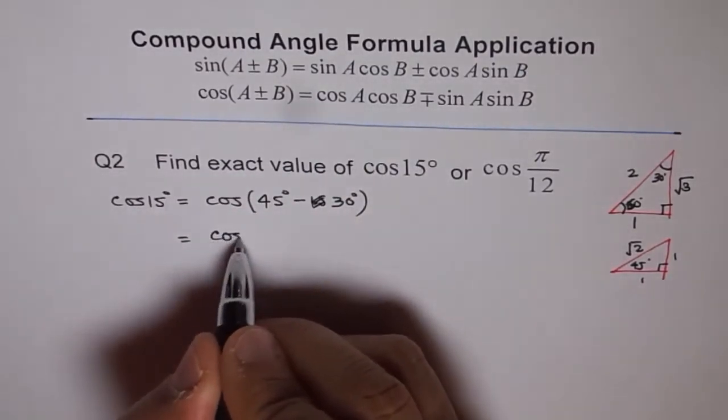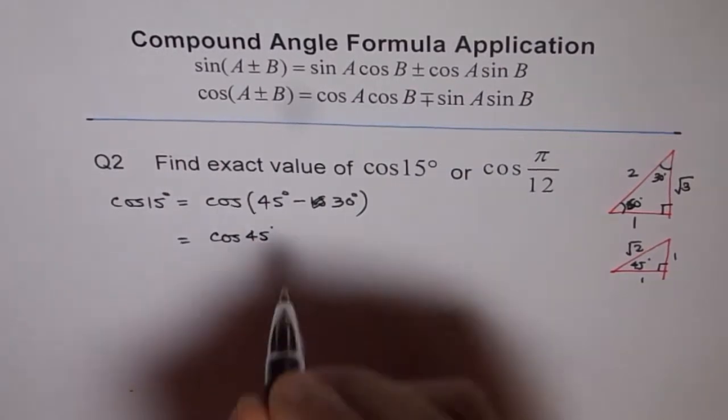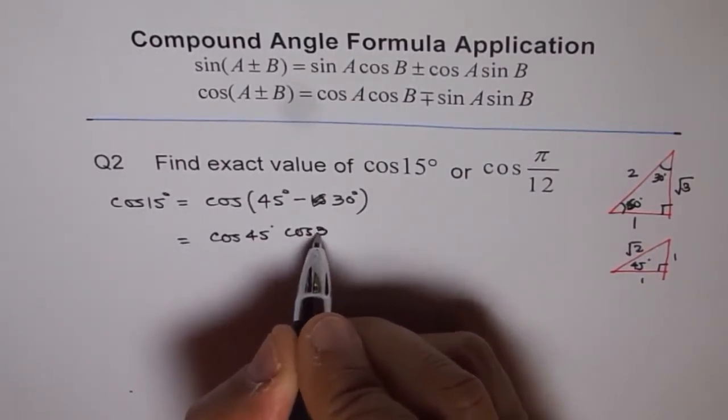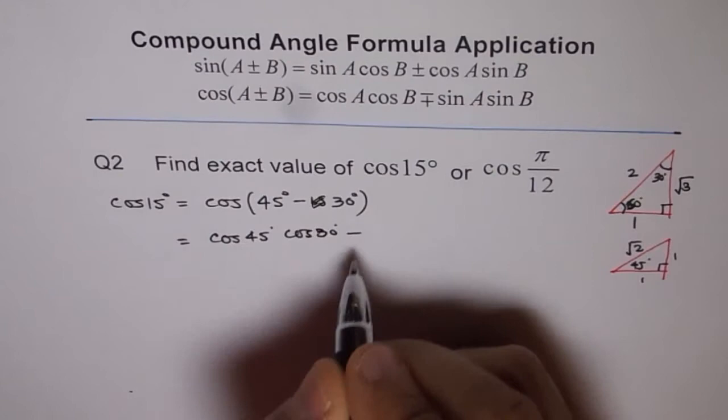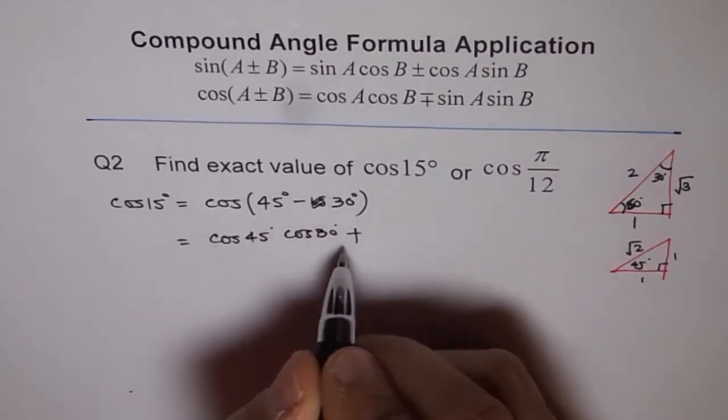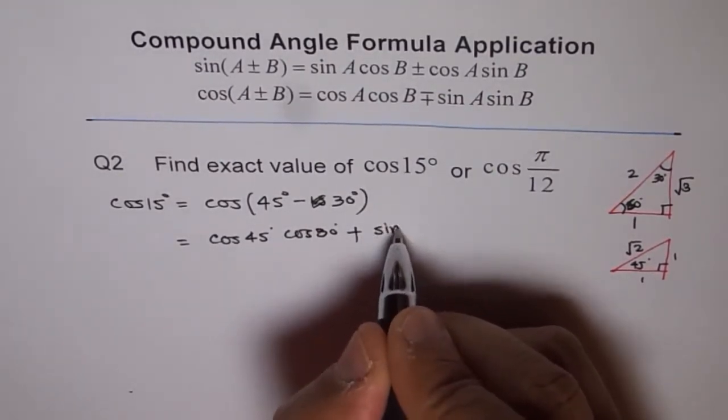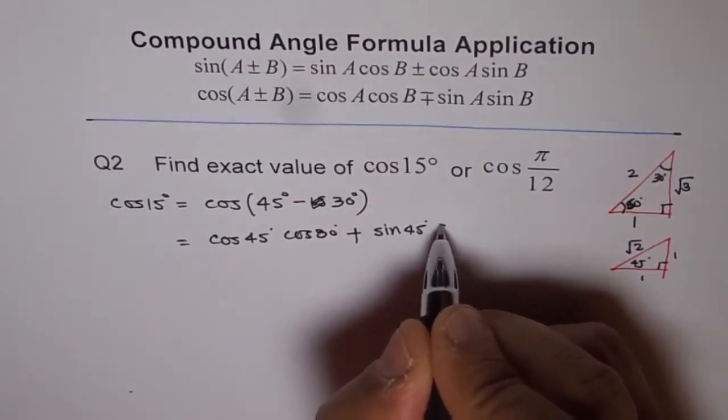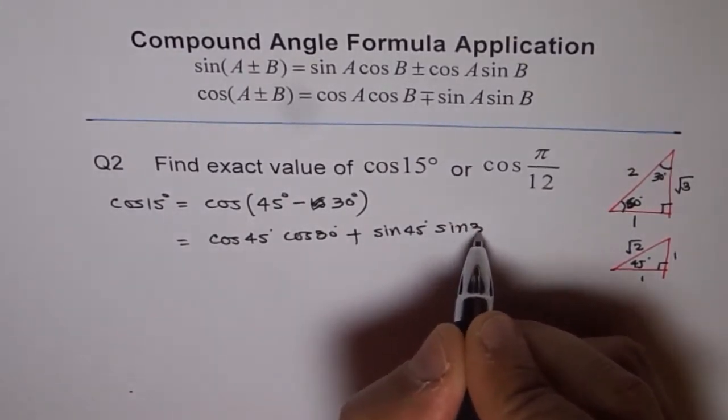So we get cos of 45 degrees times cos of 30 degrees. This was minus so it becomes plus, the reverse of this. Sine of 45 degrees times sin of 30 degrees.